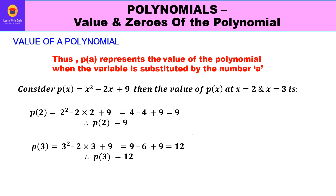Thus, p(a) represents the value of the polynomial when the variable is substituted by the number a. Like in the previous example, the variable x was substituted by the number 2, and we got the value of the polynomial as p(2) = 19.